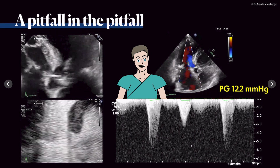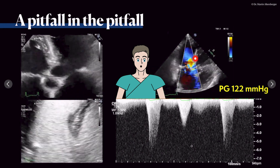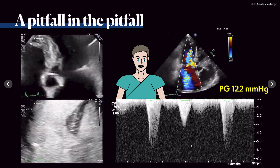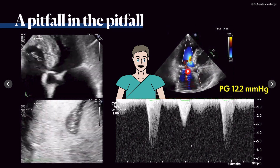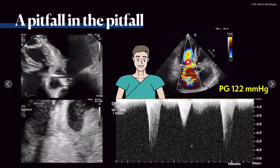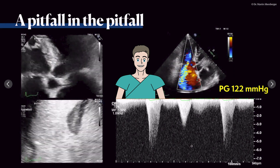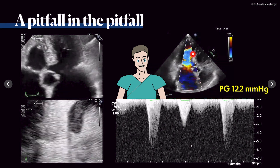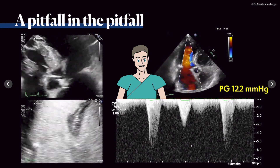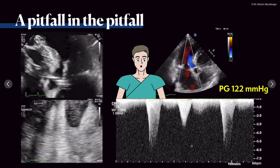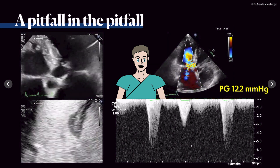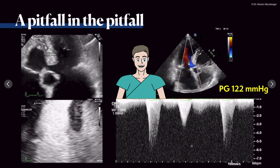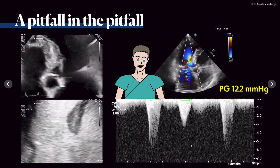There is another problem: the systolic anterior motion of the anterior mitral valve leaflet creates another pathology — mitral regurgitation, seen here. This patient has hypertensive heart disease. The narrow LVOT and thickening of the septum also lead to this SAM phenomenon. So this was not hypertrophic obstructive cardiomyopathy, but due to hypertension and a small ventricle, this gradient was created in a state of hypovolemia.